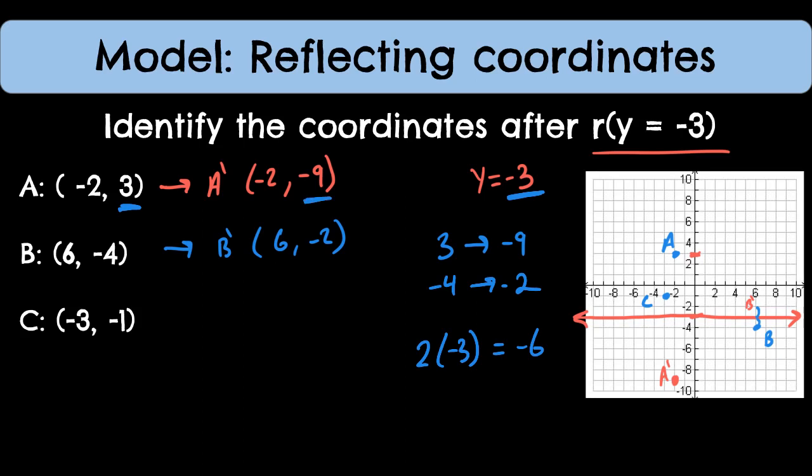So somehow I'm going to have to use this value of negative 6 to relate to the y value of 3 and relate to the y value of negative 9. Well, negative 6 minus 3 gives me that negative 9. But why am I just subtracting these values? Okay, great, I got negative 9 for point A. Let me try that again with negative 6. Let me subtract negative 4. So negative 6 minus a negative 4. That's going to be negative 6 plus 4, which does give me my negative 2.